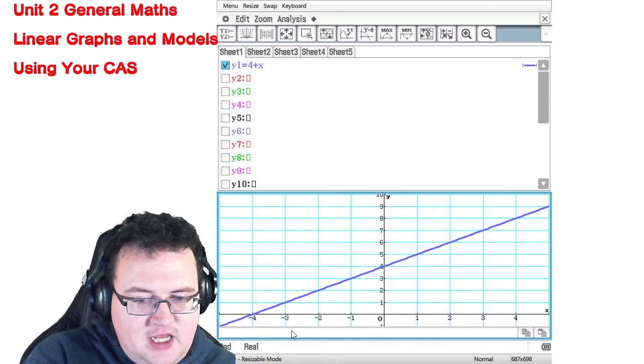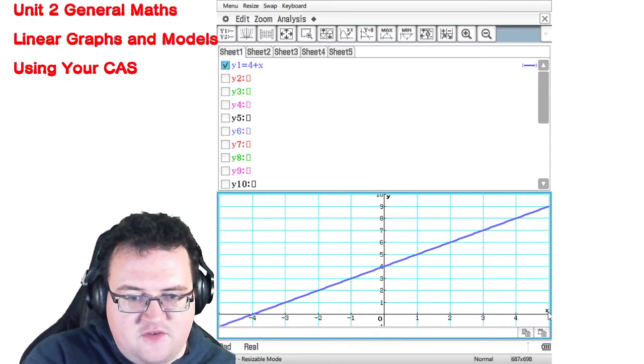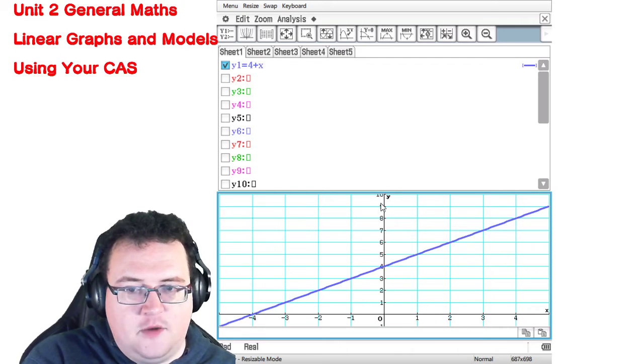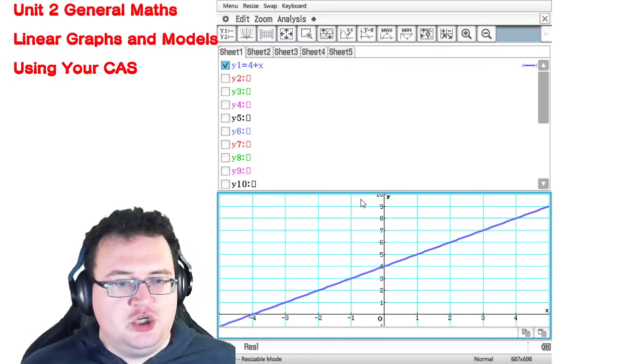So here's minus 5 here, here's plus 5 over here, minus 1 down the bottom and 10 at the top. So it only wants you to draw those values.